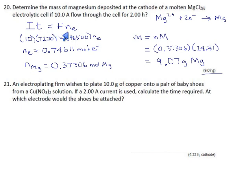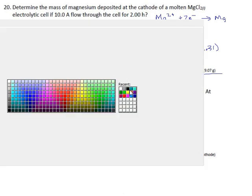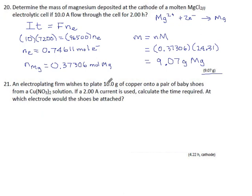An electroplating firm wants to put 10 grams of copper onto baby shoes. There's two charges for copper, +1 and +2, but they're telling us here there's two nitrates, so it's got to be the copper 2+. We are doing copper 2+ plus two electrons turning into copper metal. Let's set up our formula.